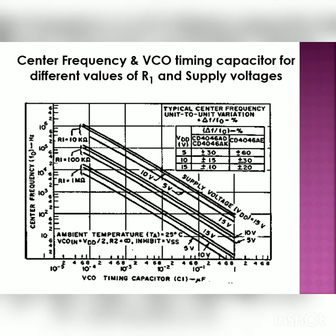This slide shows the center frequency and VCO timing capacitor for different values of the timing resistor R1 and the supply voltage. So, from this characteristic, whatever will be the calculated center frequency as per the design, we can get the approximate value of the timing capacitor C1 by considering R1 and supply voltage, and then we can select a nearby standard capacitor. So, when we are going to select a nearby standard capacitor, it means that we need to change the value of the timing resistor. Thank you.